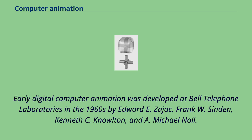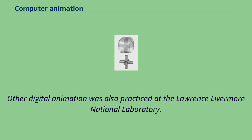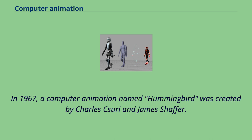Early digital computer animation was developed at Bell Telephone Laboratories in the 1960s by Edward E. Zayek, Frank W. Sinden, Kenneth C. Knowlton, and A. Michael Knoll. Other digital animation was also practiced at the Lawrence Livermore National Laboratory. In 1967, a computer animation named Hummingbird was created by Charles Ksuri and James Schaffer.